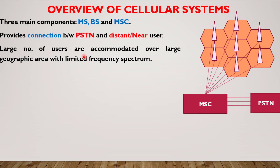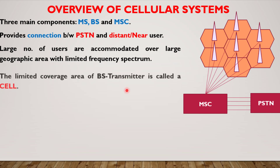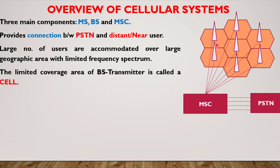A large number of users are accommodated over a large geographic area with a limited frequency spectrum. We can accommodate many users by extending these hexagonal shapes and also with a minimum frequency spectrum, meaning we can use the same frequency spectrum in one cell and in another cell by providing sufficient isolation between the two. The limited coverage area provided by the base station transmitter — this hexagonal shape — is called a cell.